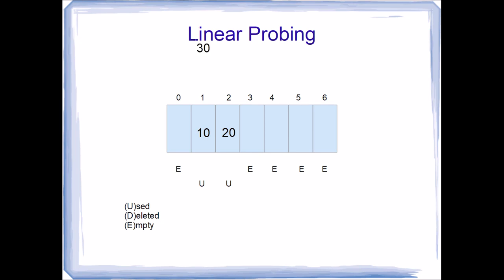Let us assume we want to add the value 30. When given to the hash function, 30 returns a hash index of 1 — another collision. We look at element 1, it's used, so we examine the next element, which is also marked as used. Then we look at the following element, which is marked as empty, so we assign 30 there and mark that element as used.